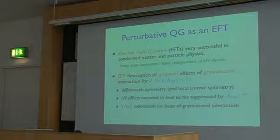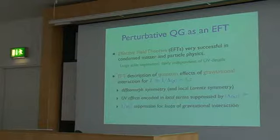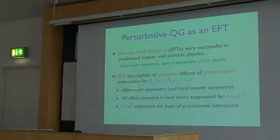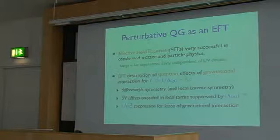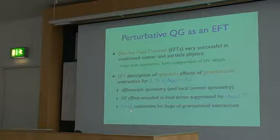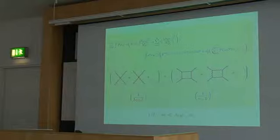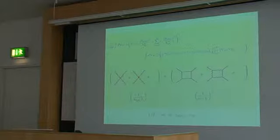You have local terms encoding positive powers of the Riemann curvature and also derivatives of the matter field. When you start doing calculations with Feynman diagrams and loop corrections, diagrams with a given number of loops are suppressed by inverse powers of the square of the Planck mass — this originates from the weakness of the gravitational interaction.